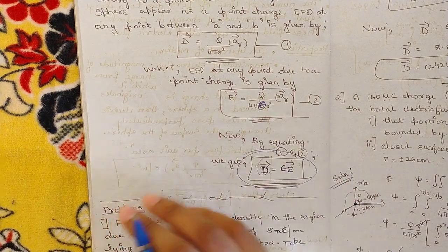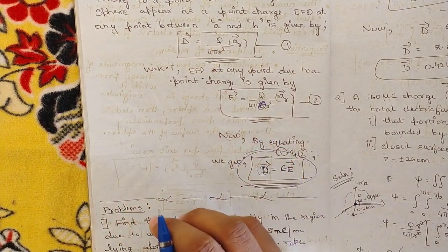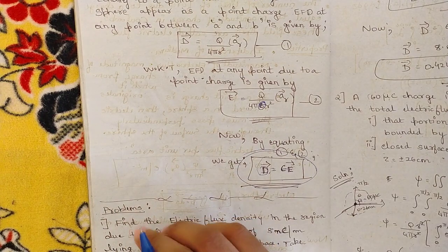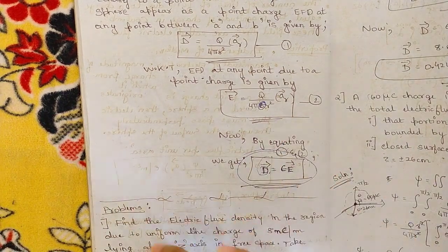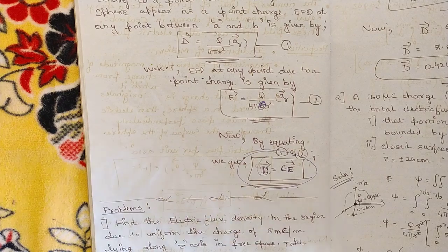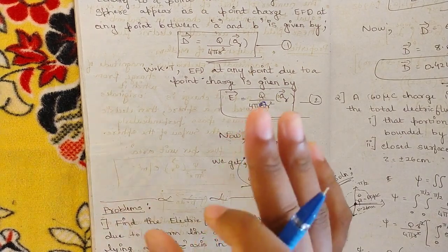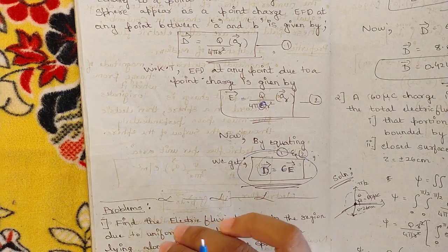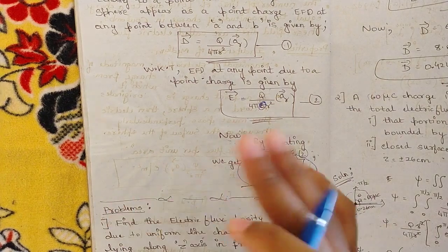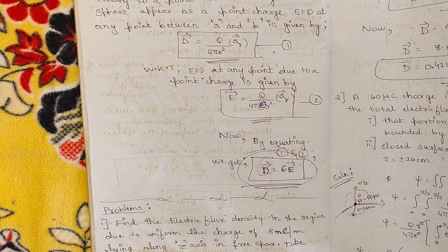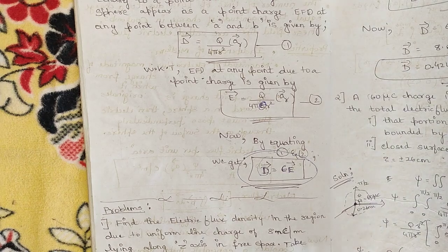This relation D equals epsilon times E is very important and plays a key role in solving problems. That was the complete introduction to electric flux density. In the next video, we will solve problems related to electric flux density and electric flux for different surfaces, which will complete module 1.